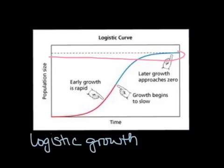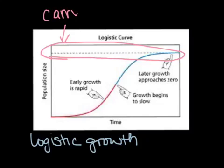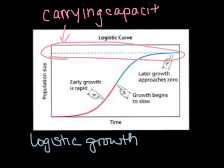This imaginary line, which we can see right here, where the population kind of maxes out, that's known as the population's carrying capacity. And a carrying capacity is the maximum number of individuals within a population that an area can support without the ecosystem being damaged.